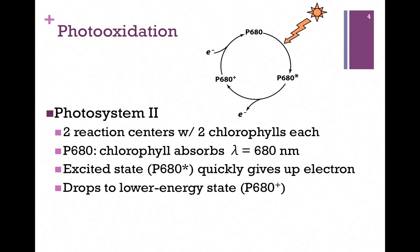Photosystem II has two reaction centers, each with two chlorophylls. The chlorophylls absorb light of a wavelength of 680 nanometers, and so it's referred to as P680 — P for pigment or photoreceptor.